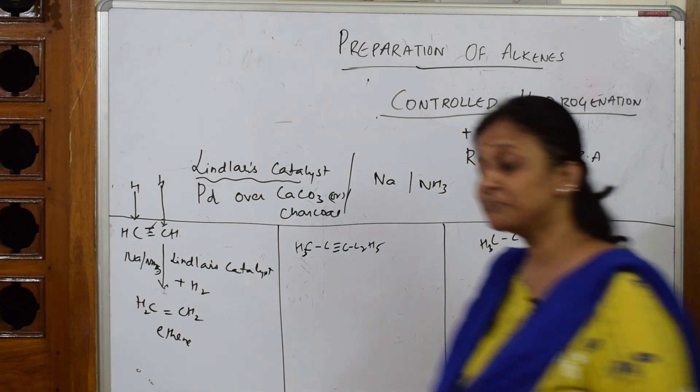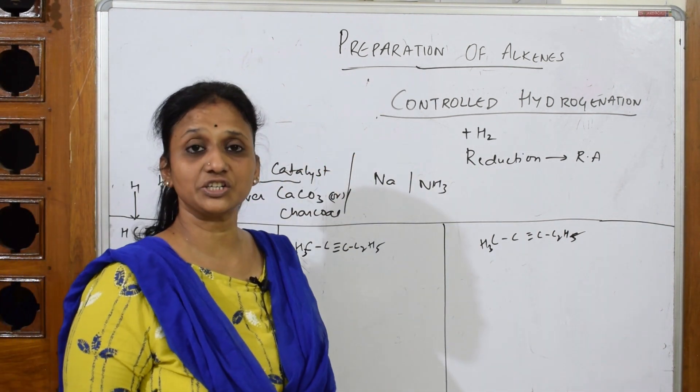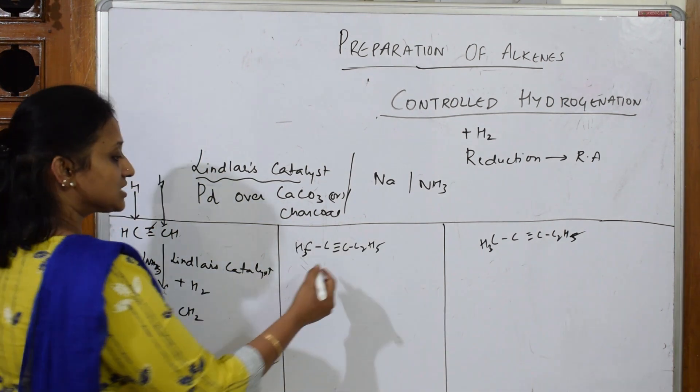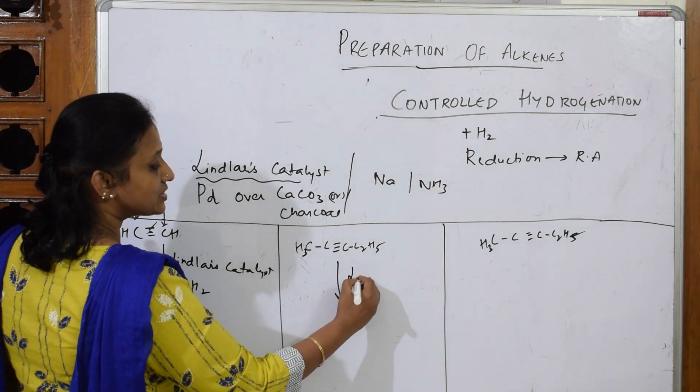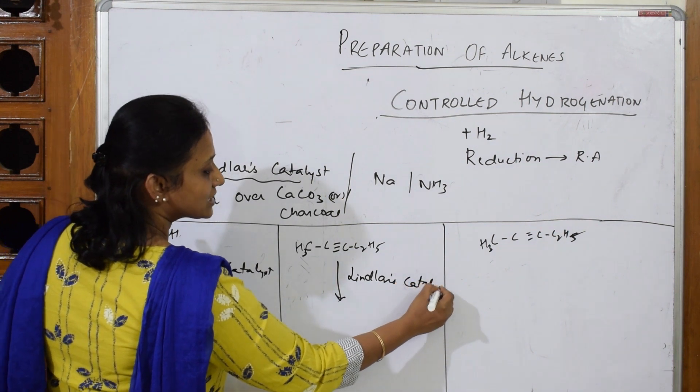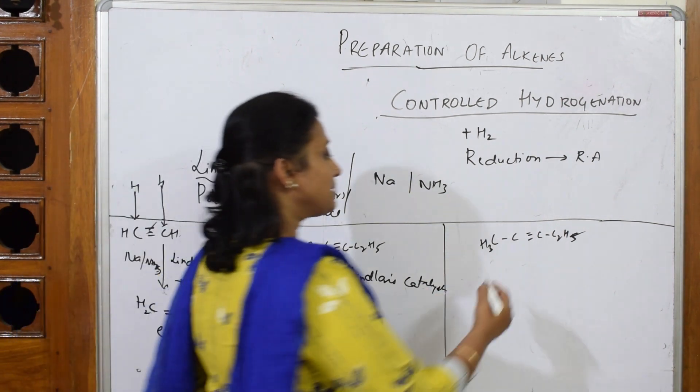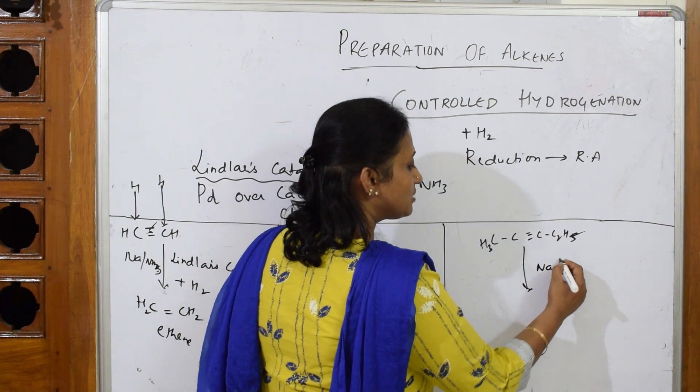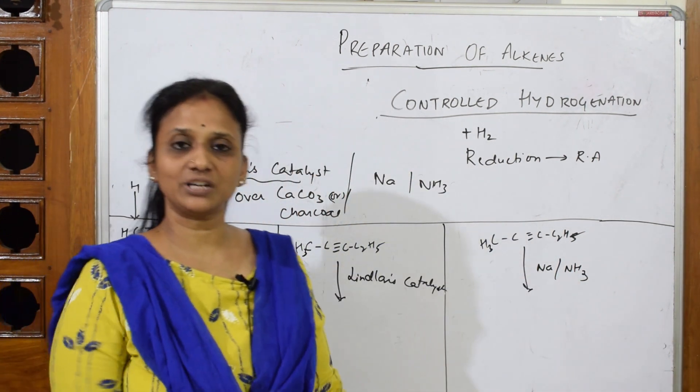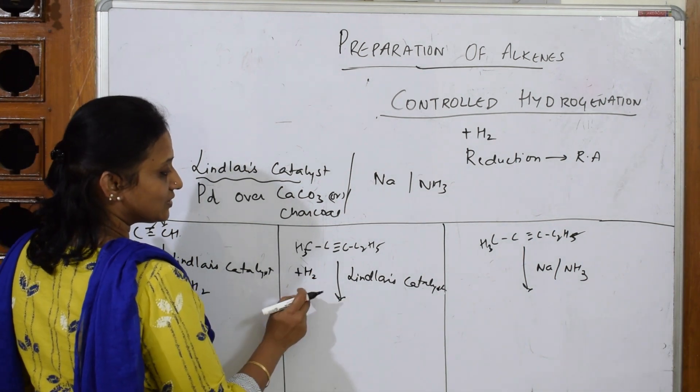We said controlled hydrogenation. I am going to control the hydrogenation, addition of hydrogen, using different reagents. But here, suppose in the question paper if you see Lindlar's catalyst - that is what is Lindlar's catalyst: it is palladium over calcium carbonate or charcoal. In the exam paper if you see sodium in the presence of ammonia, nothing. Here, the major product I am going to take, the major products only. What will this do? This will add hydrogen.